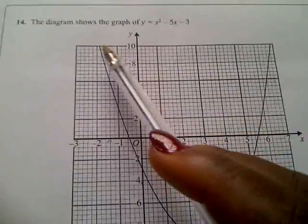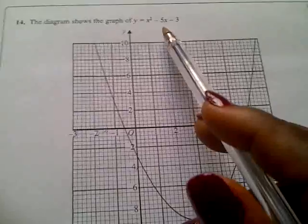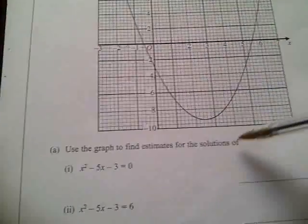Now question number 14 says the diagram shows the graph of y equal to x squared minus 5x minus 3. This is the diagram.